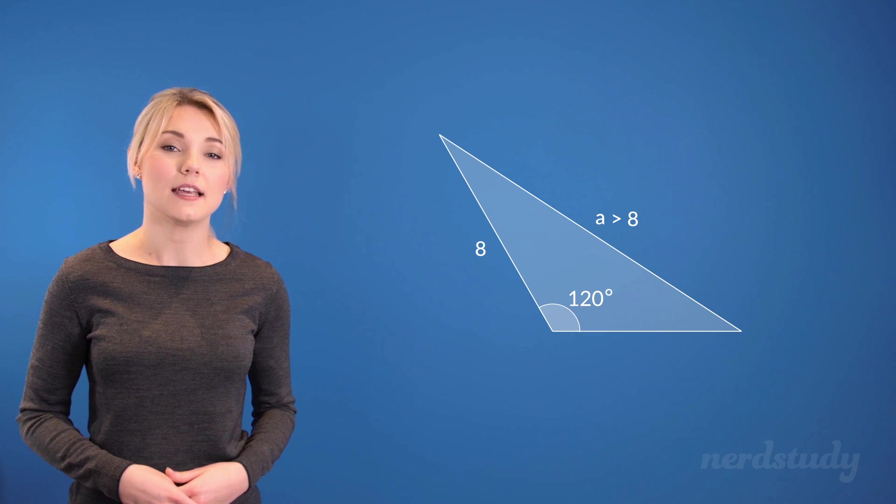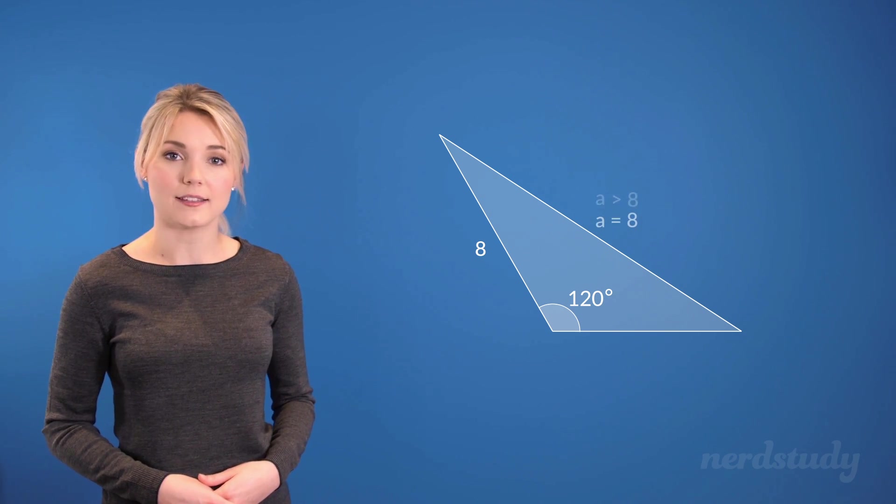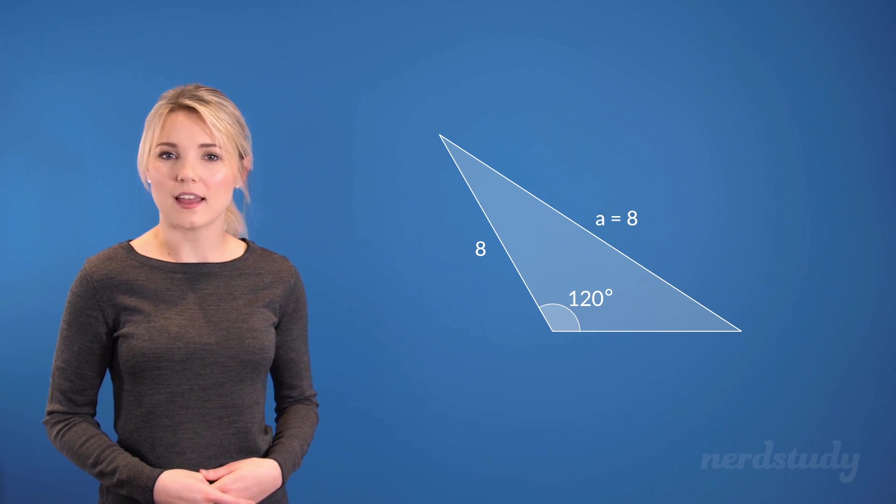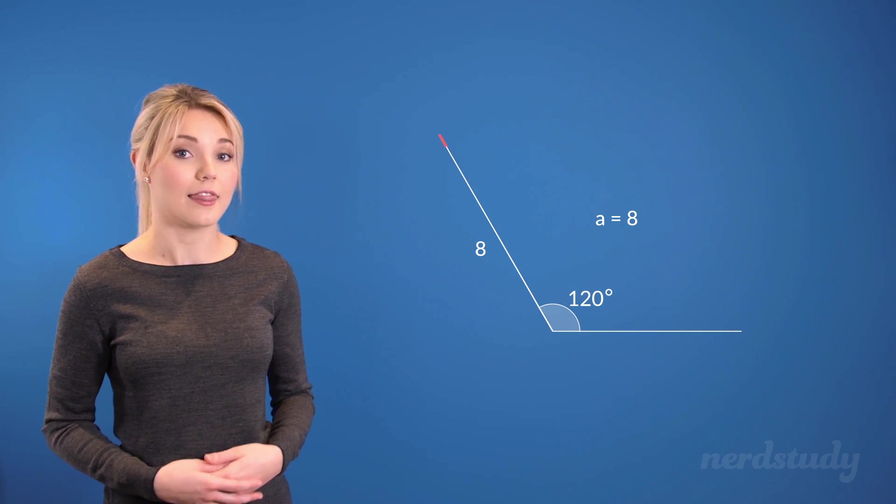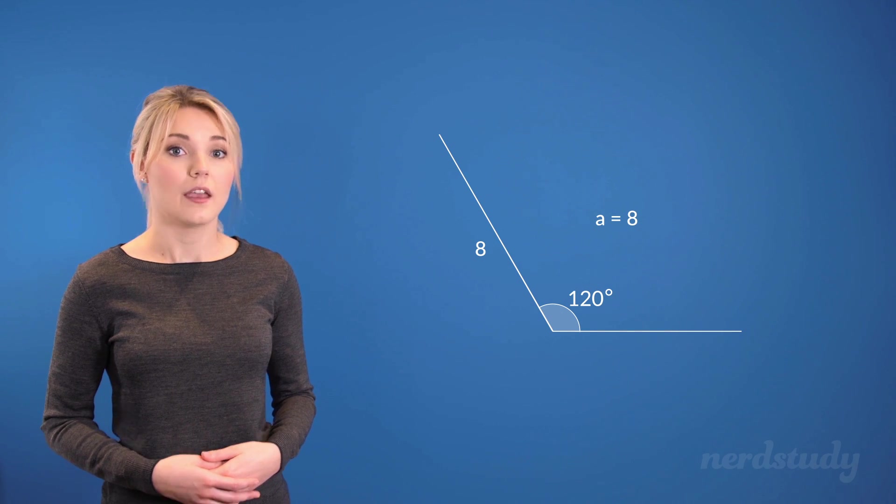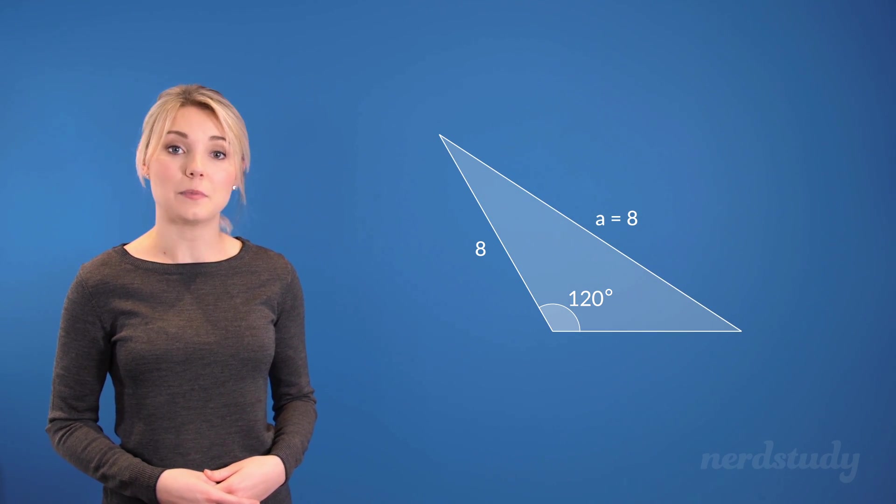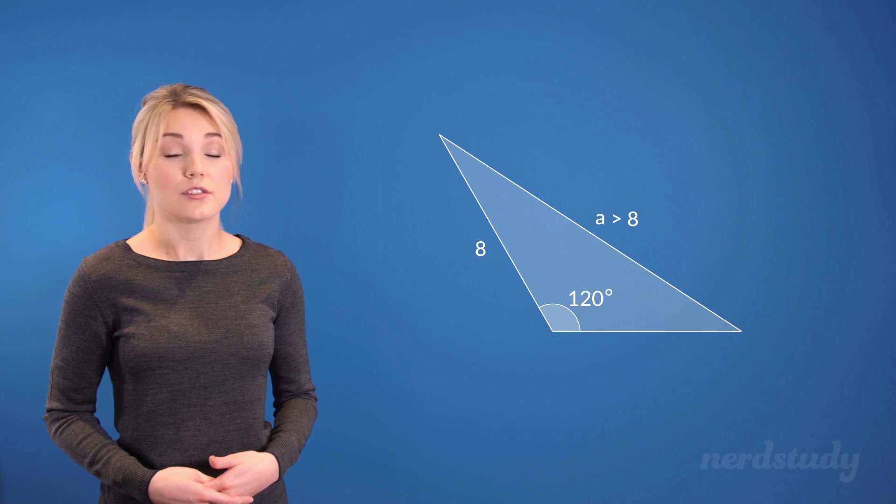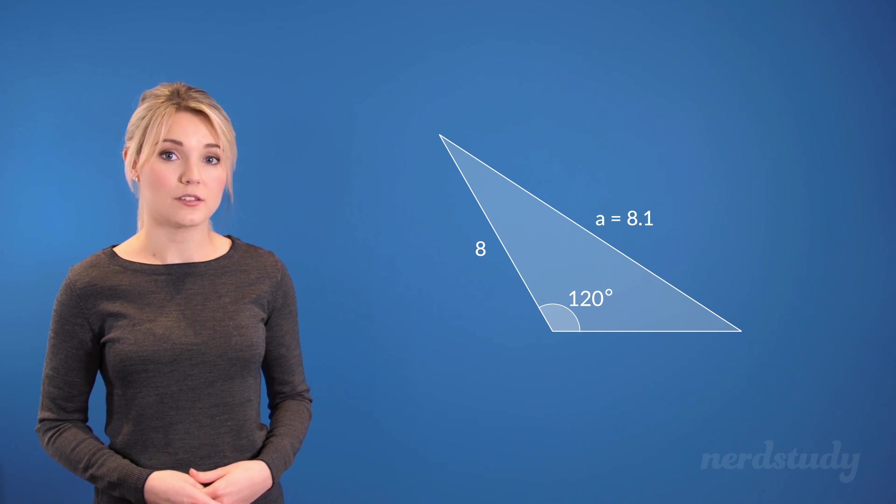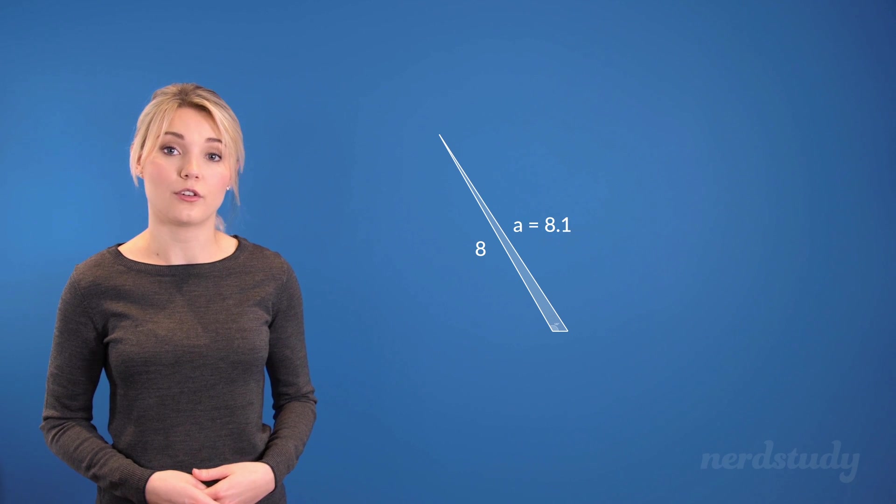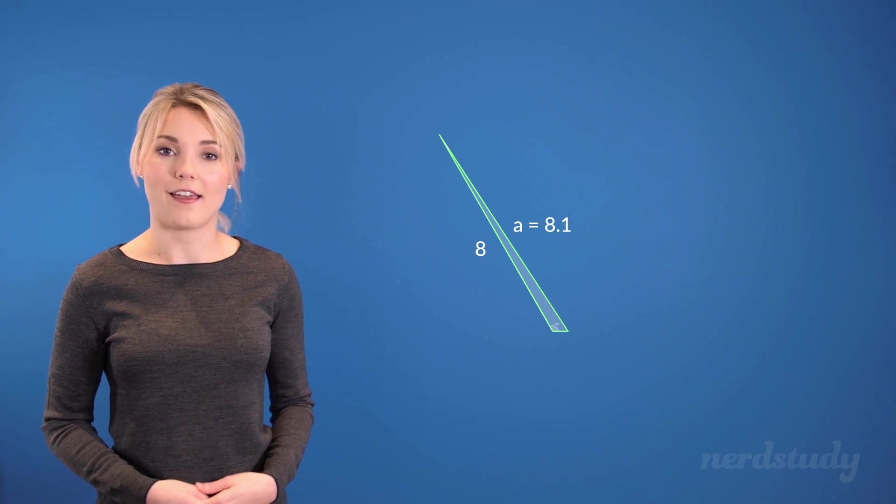This is because if side A was exactly 8 centimeters as well, we would just end up having side A and side B overlapping each other, consequently creating this two-lined figure. Therefore, side A must be anything greater than 8. So even if it was 8.1, although it's a very small difference, we'd see this super slim triangle created and thus would at least be a completed triangle.